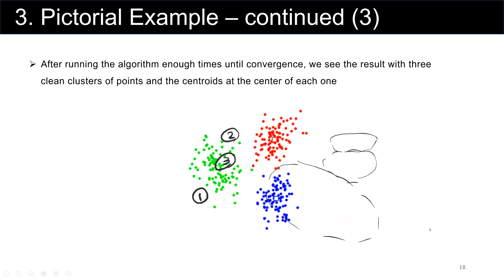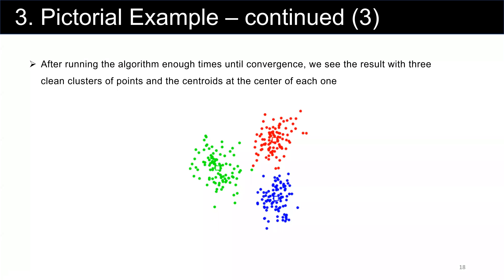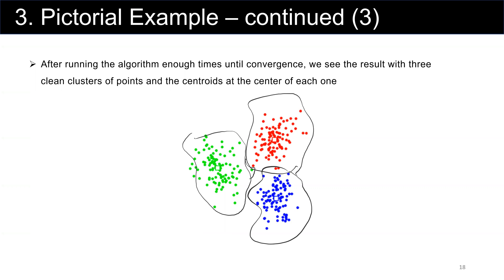Let's see what will happen in the next iteration. Ultimately, after running the algorithm several times, we will have three distinct clusters. The centroids are updated over time, which means we have a better classifier. And finally, if we run the algorithm one more time, we are going to see exactly the same classification.